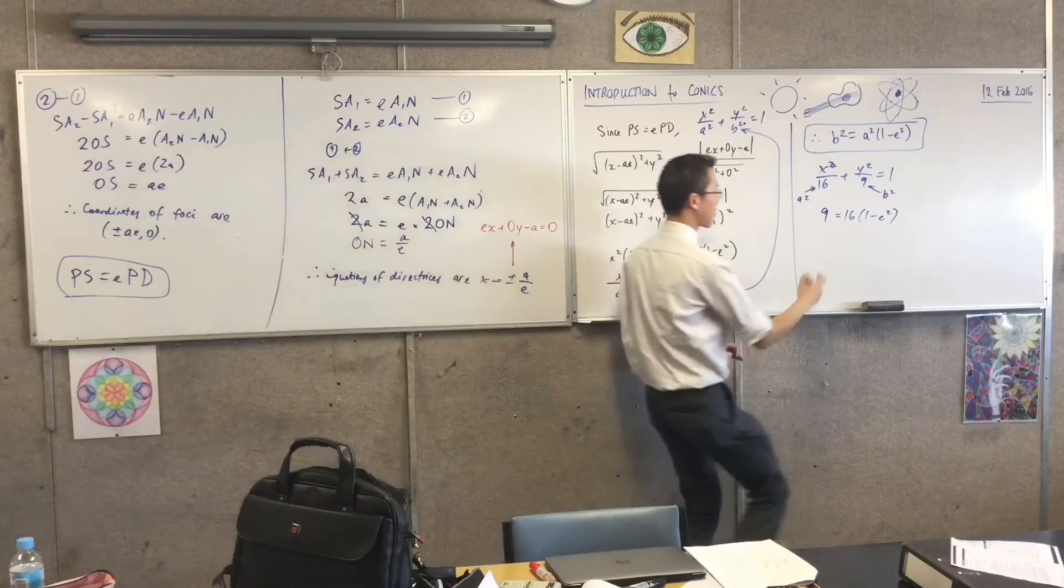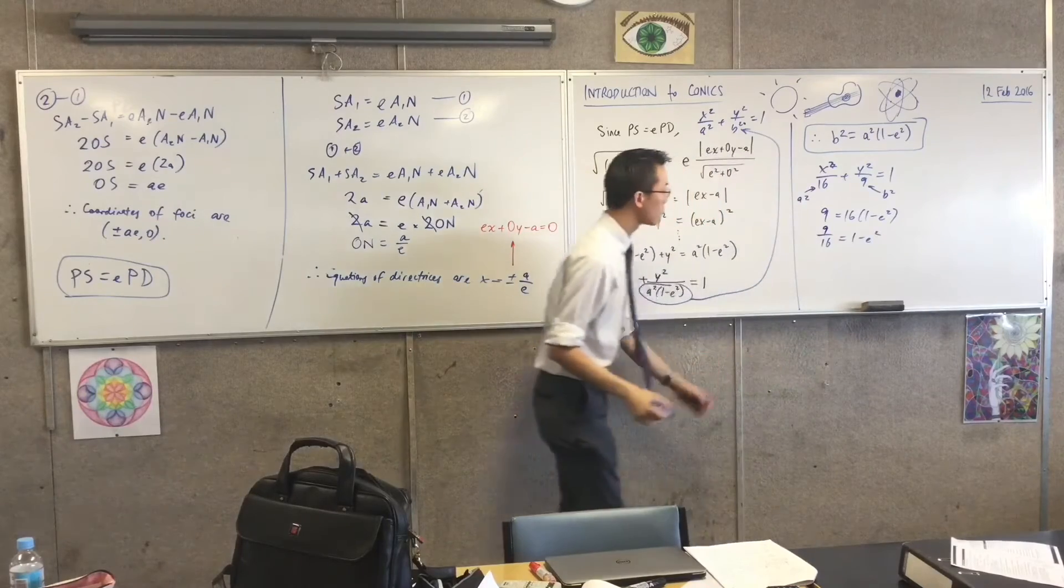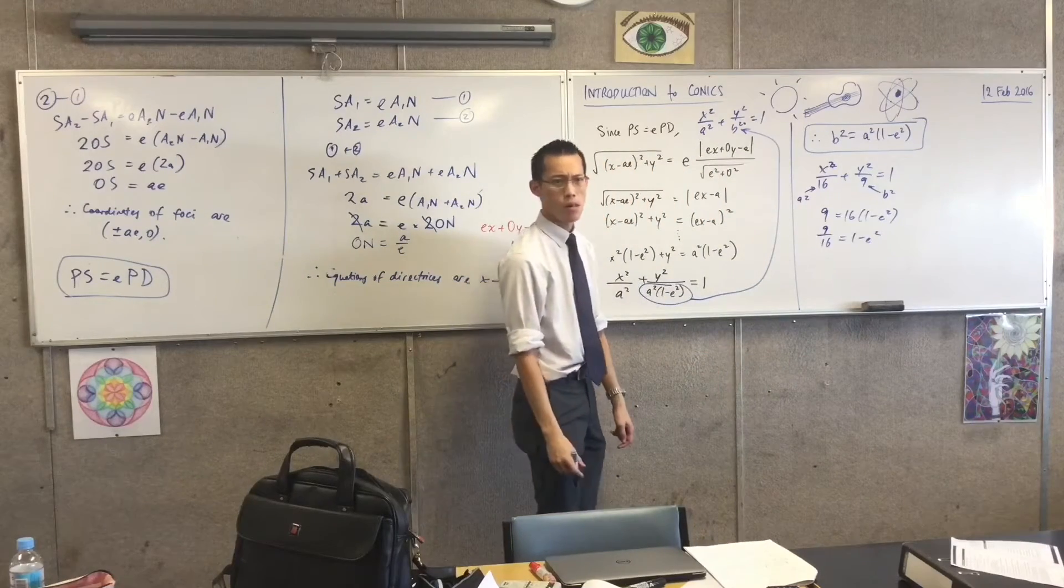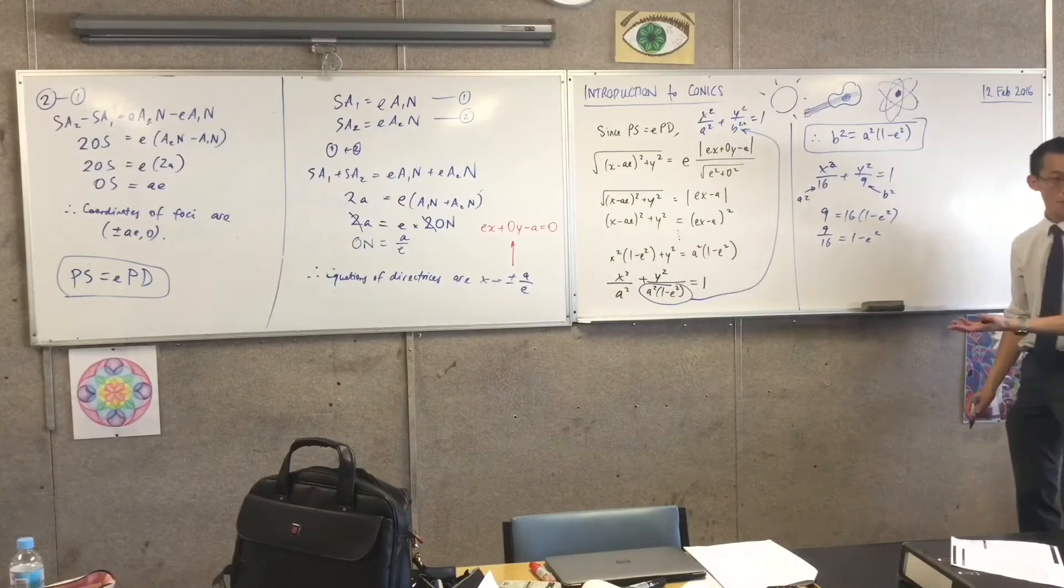Then you divide: 9 on 16 equals 1 minus e squared. What do I do now? I need to subtract 1 from both sides.